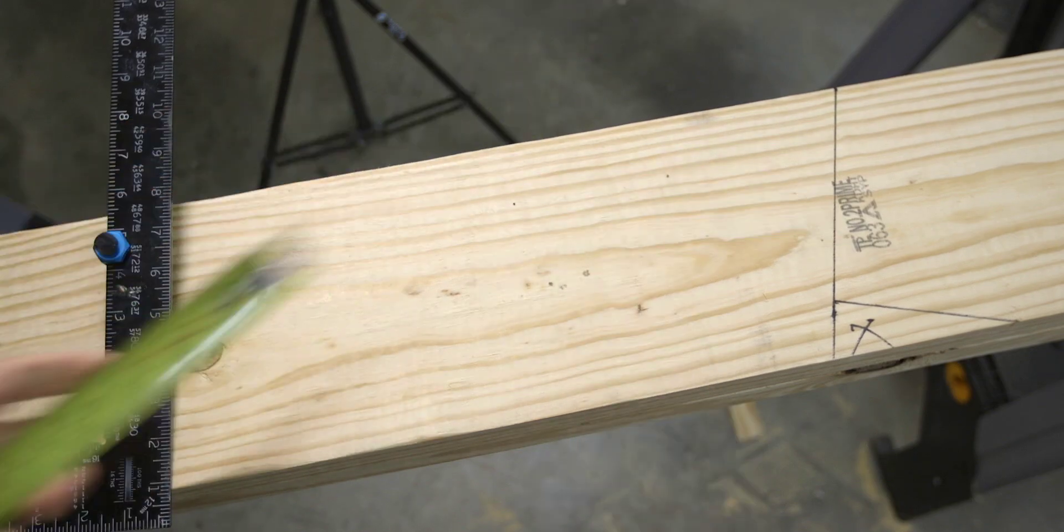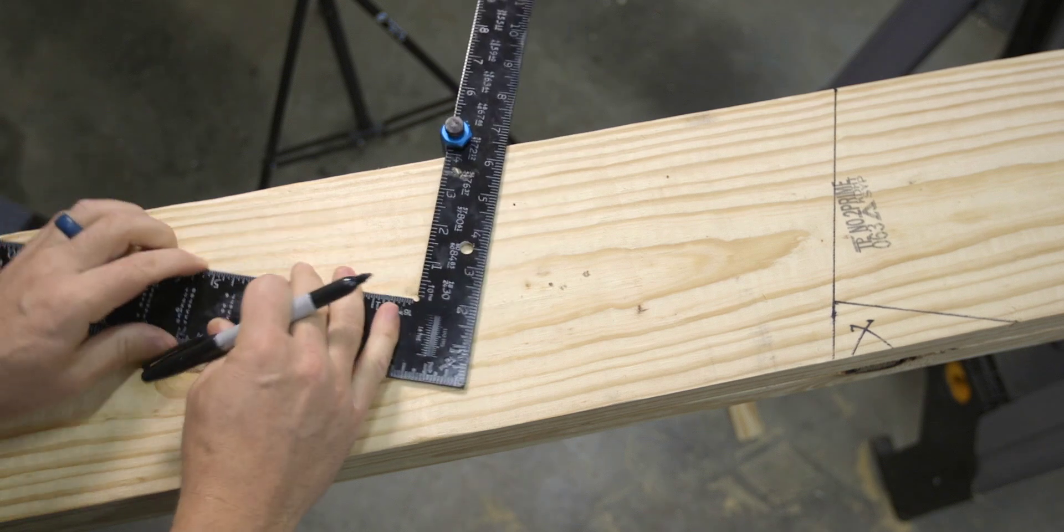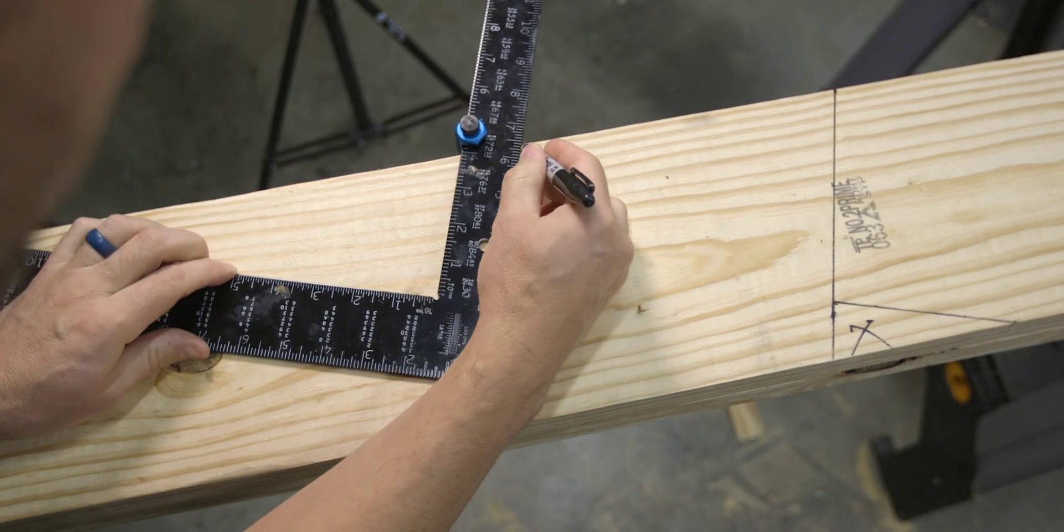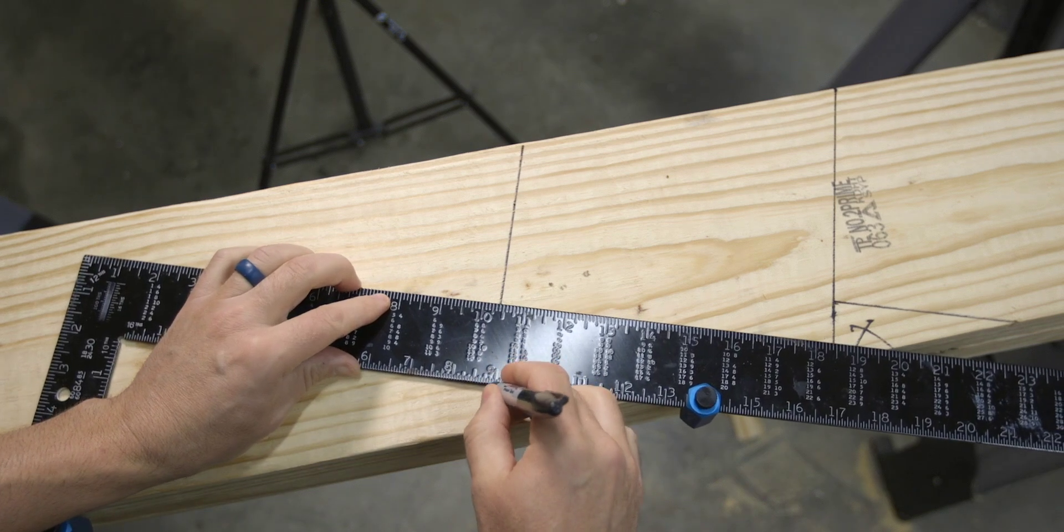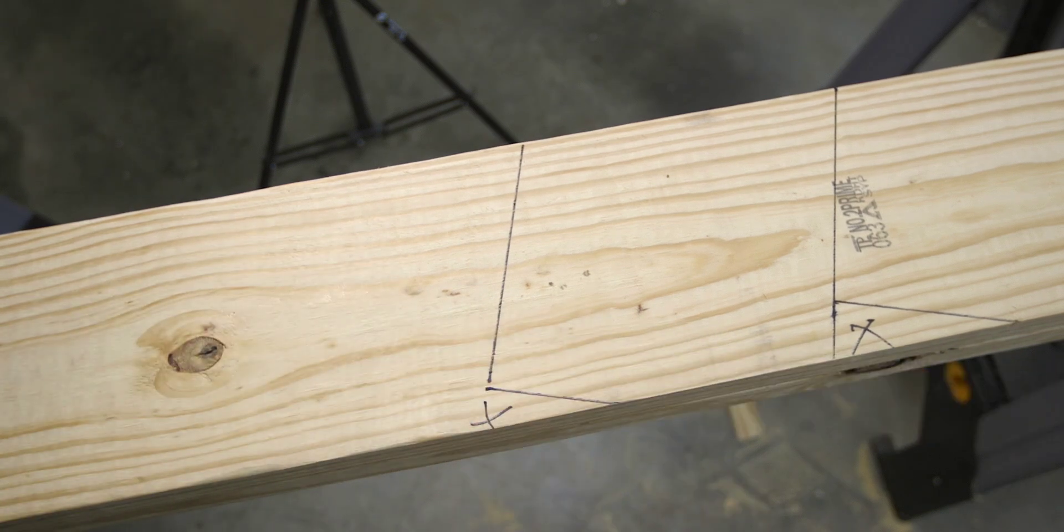Next, lay out your desired overhang and soffit amount. In our case, that's 8 inches over from the outside building line, and then down 6.5 inches for the soffit cut, and everything with an X gets cut out.